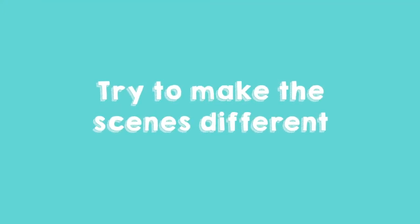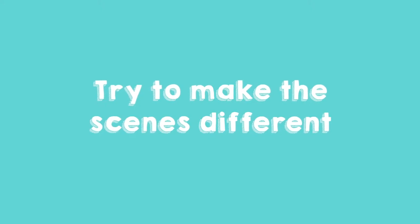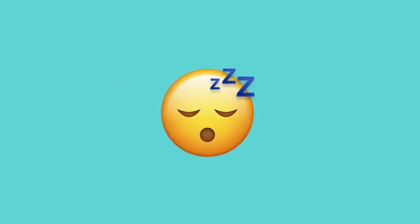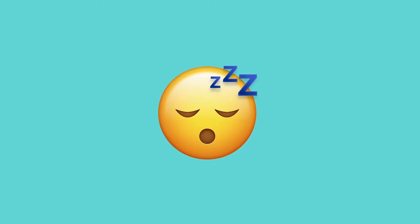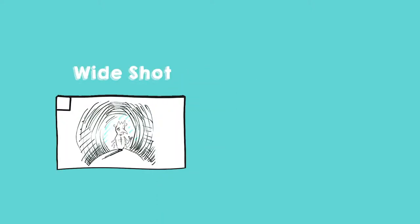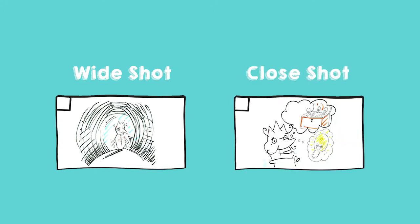Tip: Try to make the scenes different. If you show the same kind of scene all the time, you will get a dull movie. Try to vary your scenes, making them more interesting. One time from far away — a wide shot — which is convenient if you want to give an overview. And then maybe a close shot, very close to your character, great for when you want to show a facial expression, for instance when somebody startles or is angry.